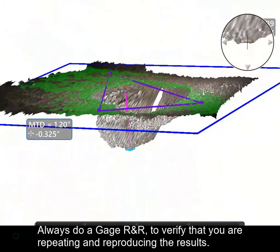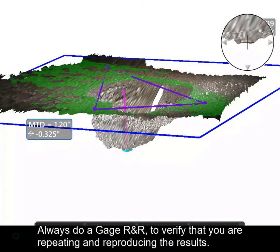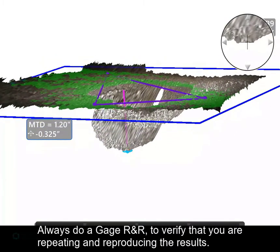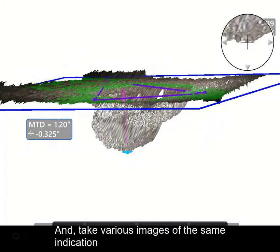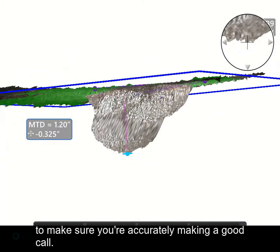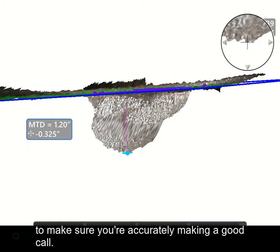Always do a gauge R&R to verify that you're repeating and reproducing the results, and take various images of the same indication to make sure you're accurately making a good call.